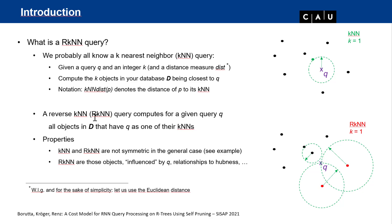A reverse nearest neighbor query also takes a query object q and an integer k, but now it computes all objects in the database that have q as one of their k nearest neighbors. For example, with k=1, the nearest neighbor of q is not a reverse nearest neighbor of q because that object finds another point as its first nearest neighbor. The red dots are reverse nearest neighbors because they find q as their first nearest neighbor. As you can see, nearest neighbor and reverse nearest neighbor queries are not symmetric in the general case.